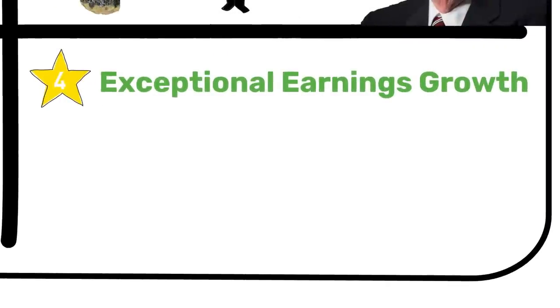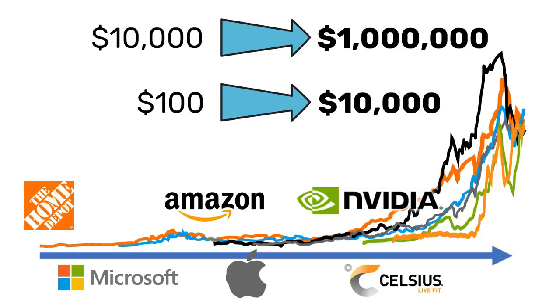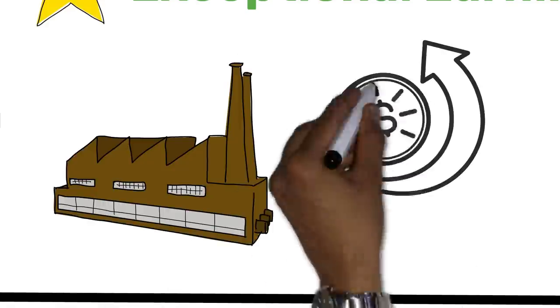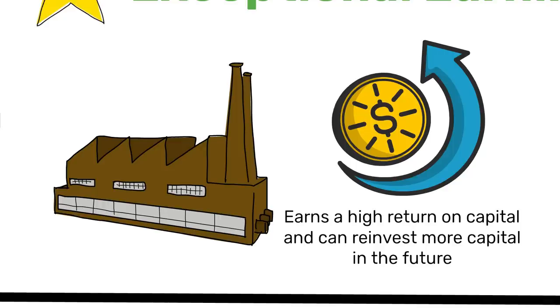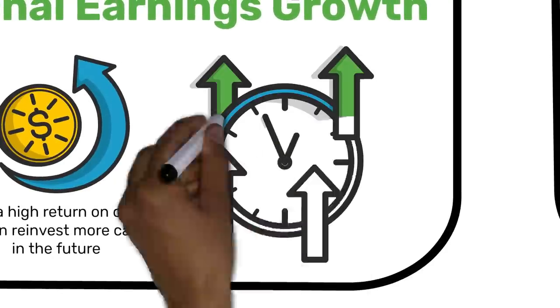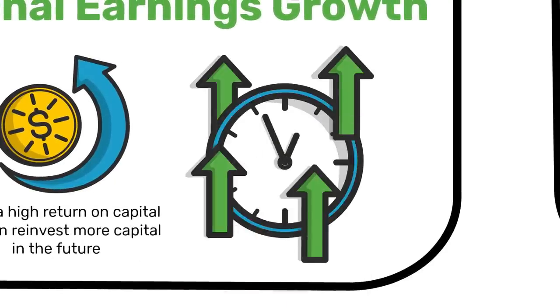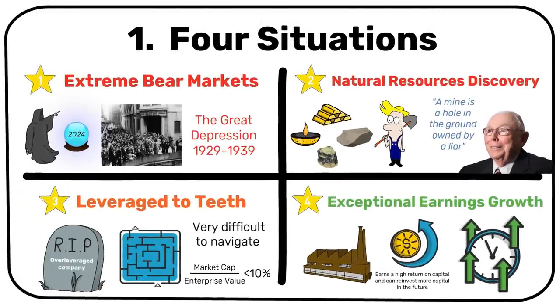It is the fourth situation that we will focus on in this video. All of the companies mentioned in the beginning belong here. They earned a high return on capital and were able to deploy more and more capital at similar rates over a very long time. When we buy such companies, we have arithmetic and father time on our side. But we need to answer two important questions.